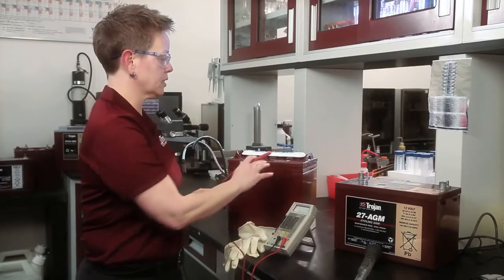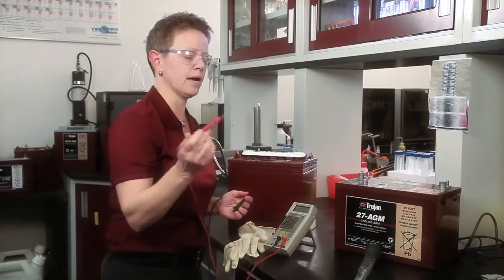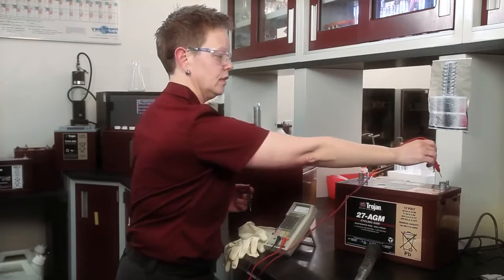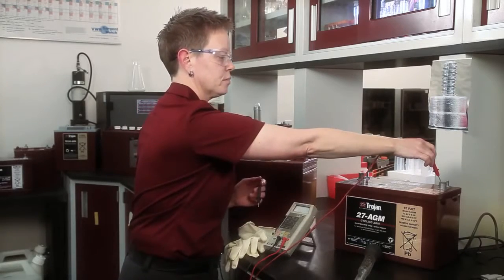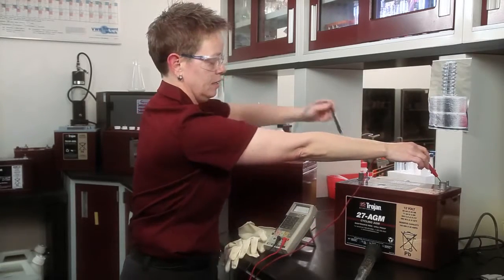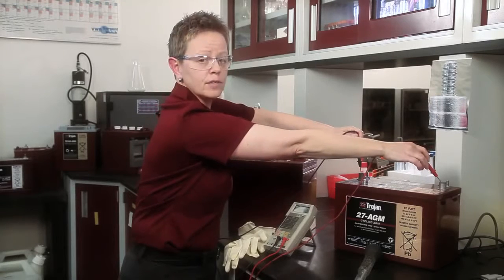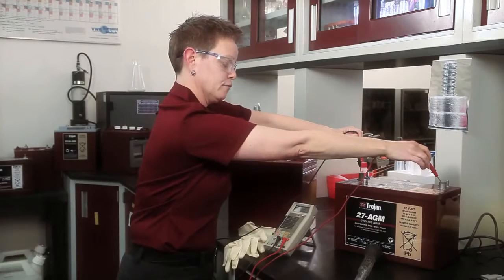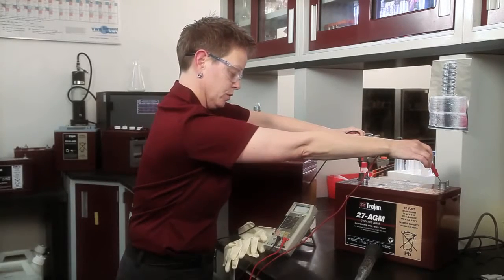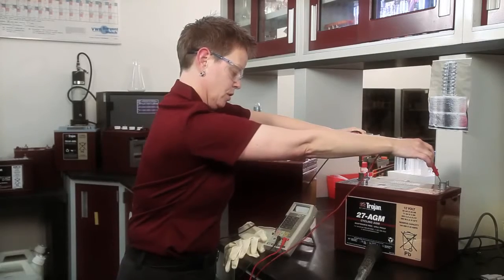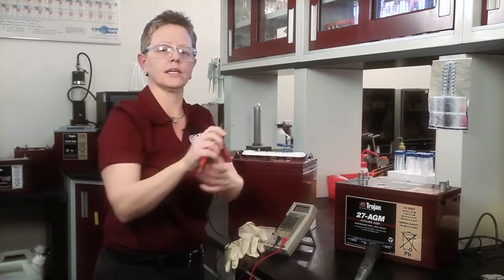You do the same technique that you used on the deep cycle flooded battery. You take the positive lead from the voltmeter connected to the positive terminal on the battery, and the black negative lead from the voltmeter on the negative terminal of the battery, and record the voltage. 12.65, an acceptable voltage.